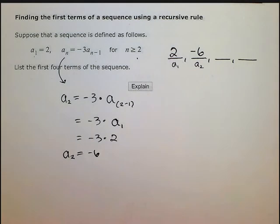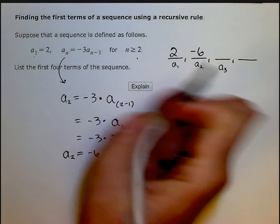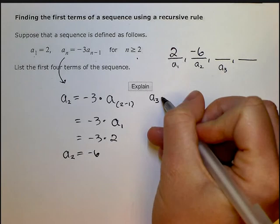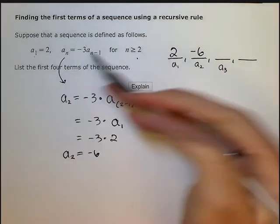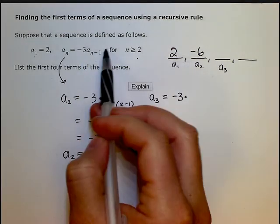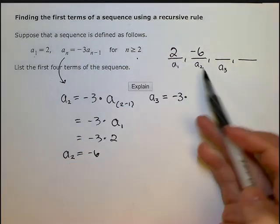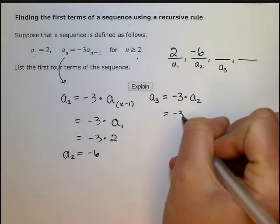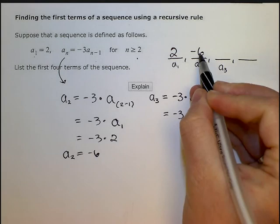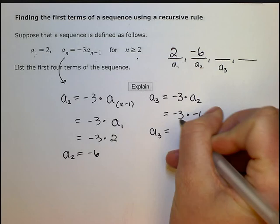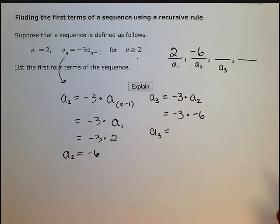To find my third term, which we call a sub 3, I'm going to do a similar thing. I want to find a sub 3. So instead of n, I'm using 3 because that's what I'm trying to figure out. So a sub 3 equals negative 3 times a sub 3 minus 1, which is a sub 2 because that's the previous term. So then I have negative 3 times my previous term, a2, is negative 6. So I have that a sub 3 equals negative 3 times negative 6 is a positive 18.